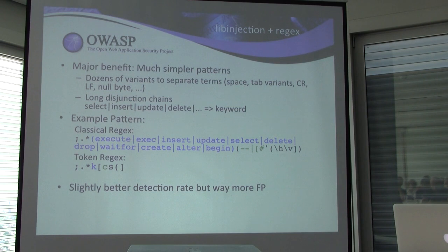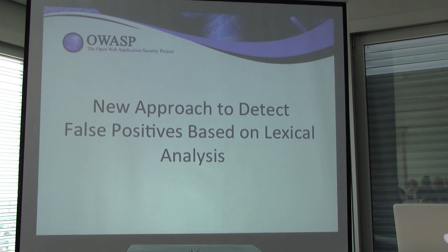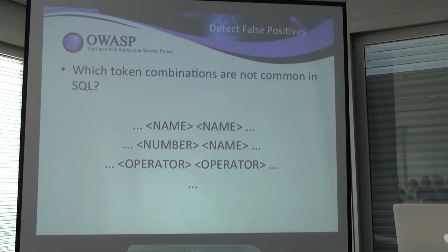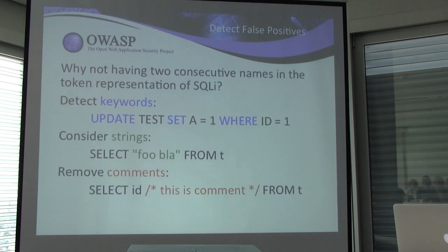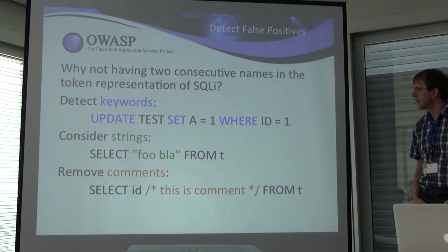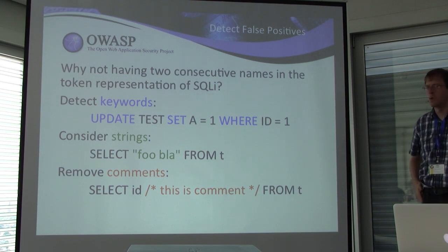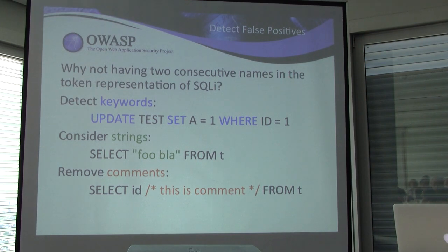We tested this new approach and found that the detection rate was better than our current regular expressions. Unfortunately, we had more false positives. So we thought: how could we reduce the false positives? The new approach is to think about which token combinations are not common in SQL — for example, two consecutive names, a number followed by a name, two numbers, or two consecutive operators. Why are two consecutive names not common in SQL? When you have an UPDATE statement and you parse all the keywords, you no longer have two consecutive bare names. The parser also considers strings, comments, and everything regarding this helps make the approach possible.